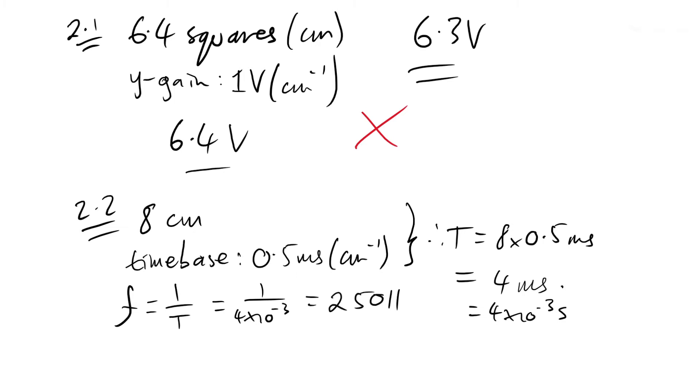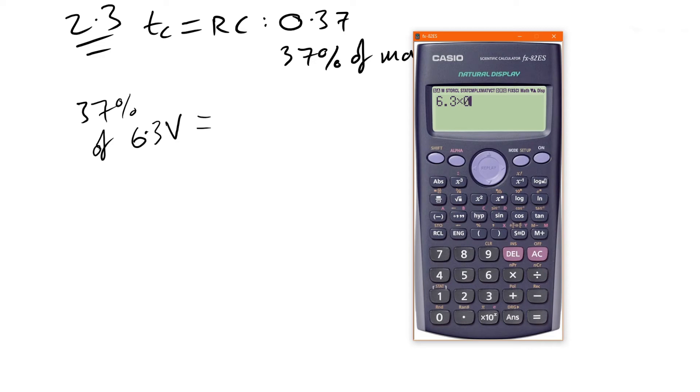Next, we're being asked to determine the time constant from a graph. We know that time constant, let's call it tc, that's equal to RC, and that is when you get 0.37 or 37% of a max value or any value for that matter. So we're going to find 37% of that peak to peak voltage. Let's use their value: 6.3 times 0.37, that gives us a voltage left of 2.3 volts.